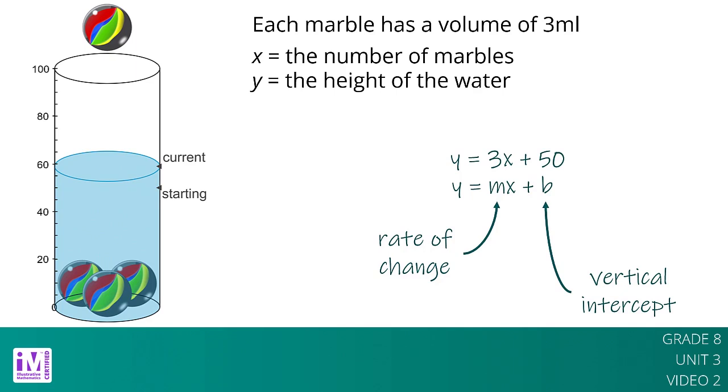The 3 represents the rate of change, or slope, of the graph, and the 50 represents the initial amount, or vertical intercept, of the graph.